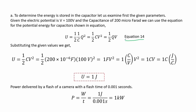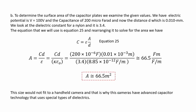One joule stored energy is quite large for a camera. A flash typically lasts about 0.001 seconds, which means the power of the flash would be 1 kilowatt. For part B, to determine the surface area of the capacitor plates, given the electric potential of 100 volts, capacitance of 200 microfarad, and distance d of 0.01 mm, and noting the dielectric constant for nylon is 3.4, we use equation 25 and rearrange to solve for area. The result is approximately 66.5 meters squared — an area that would not fit a handheld camera, which is why cameras use advanced capacitor technology with special types of dielectrics.